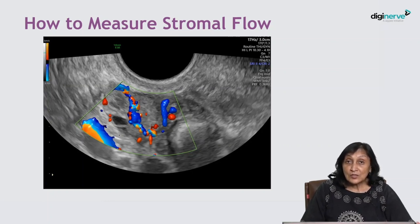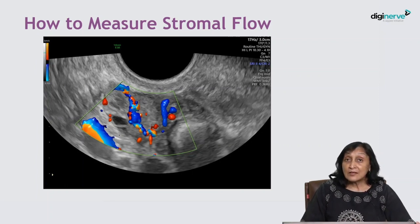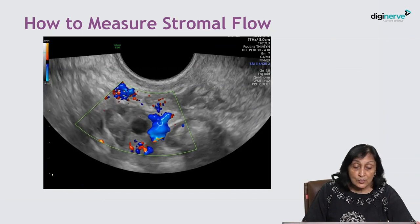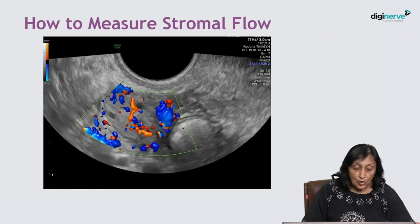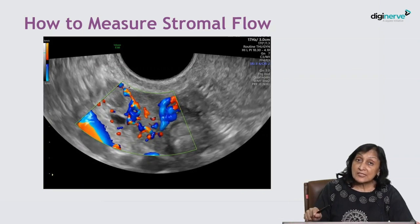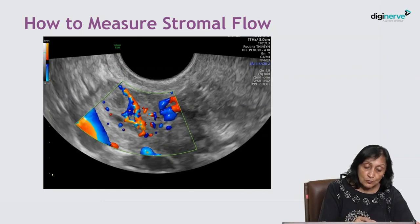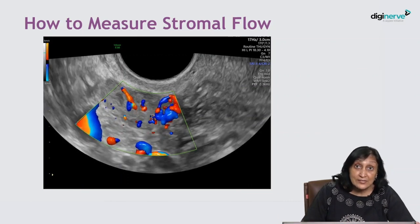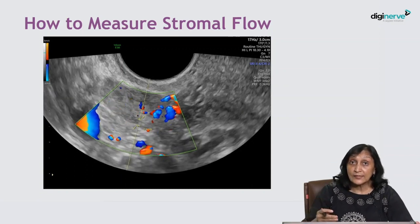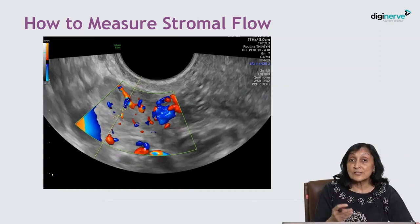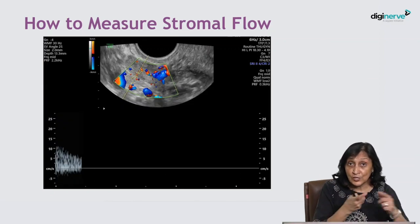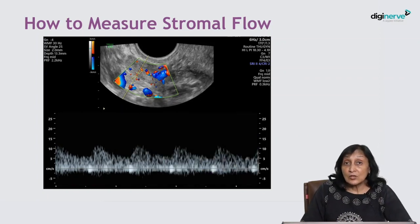Once you locate the ovary and switch on the color box, the color box should be large enough to include the entire ovary. Then as you see the color, you scroll across to find a vessel in the long axis which can be traced outside the ovary — meaning it is a vessel entering the ovary from outside, which means it is an ovarian artery or an ovarian branch of the uterine artery, or sometimes both, as you can see here, may be intermingled. That plane is called the hilar plane.